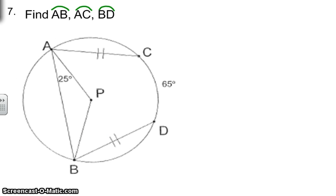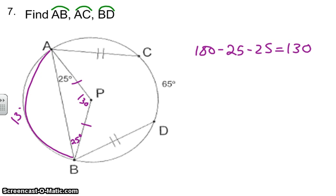And then finally, number seven, the radii are congruent. PA is congruent to PB. And if sides, then angles. So this is also going to be 25. And if you have any isosceles triangle, then we know we can just take 180 minus the 50, or minus the 25, minus 25, and that's going to equal 130 degrees. So I'm going to put that as my central angle. And if my central angle is 130, that means AB is going to be 130 degrees.